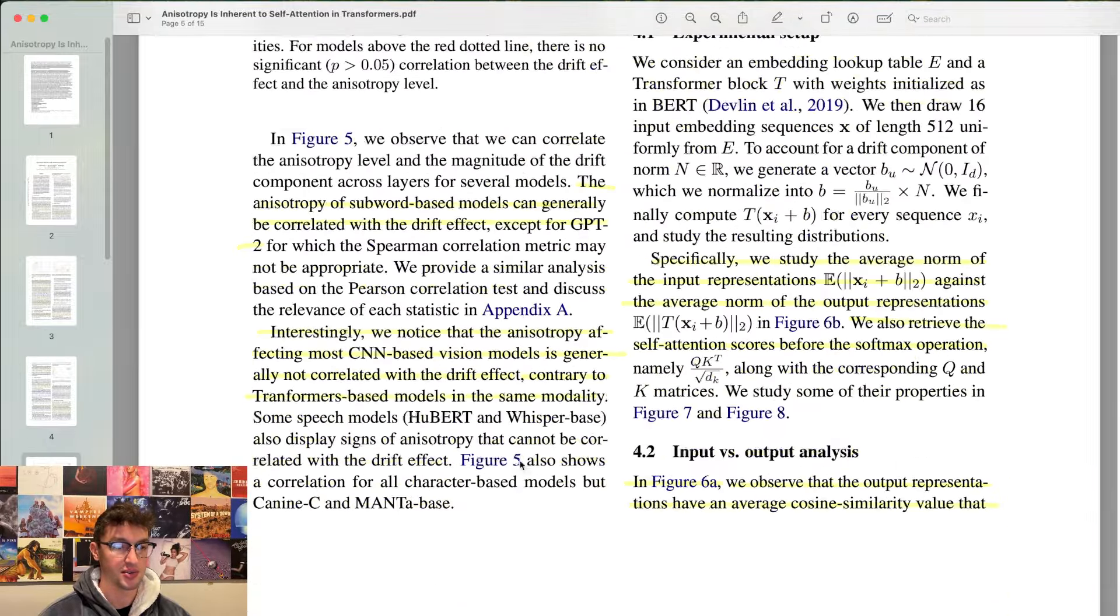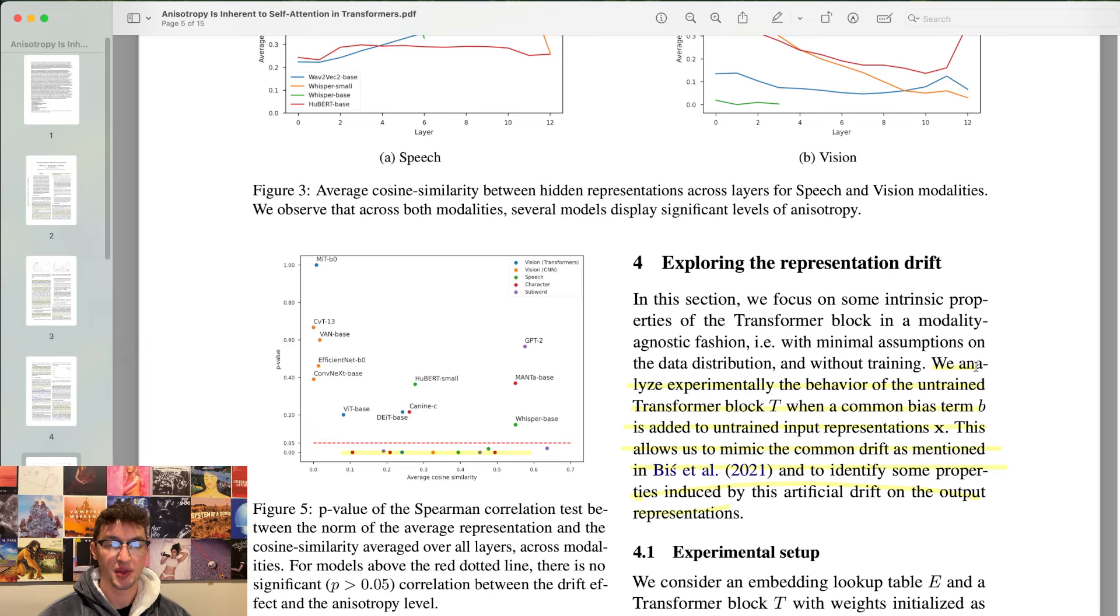Interestingly, we noticed that the anisotropy affecting most CNN-based vision models is generally not correlated with the drift effect contrary to transformers-based models in the same modality. So that graph earlier was convolution-based vision model, not a transformer. This makes a lot more sense if we're thinking about is it maybe transformers that are doing this specifically? This is the attention mechanism.